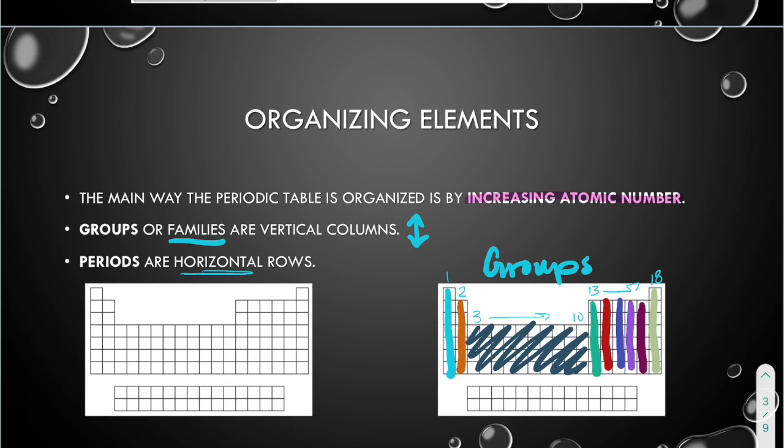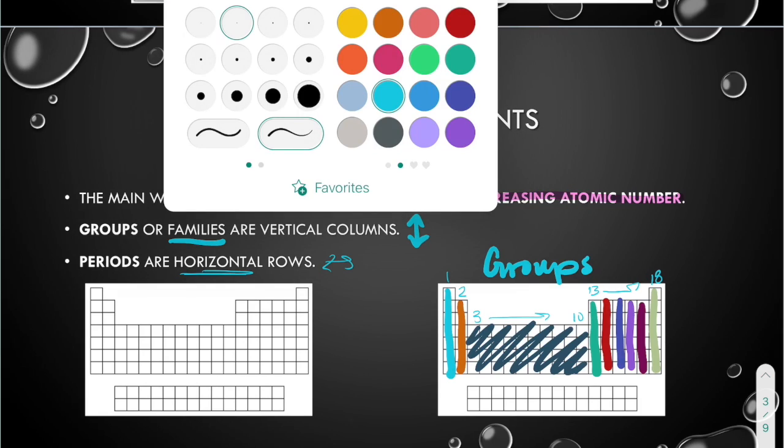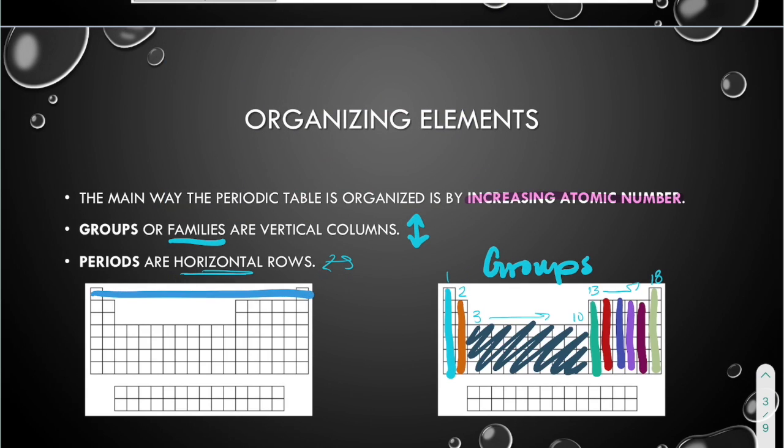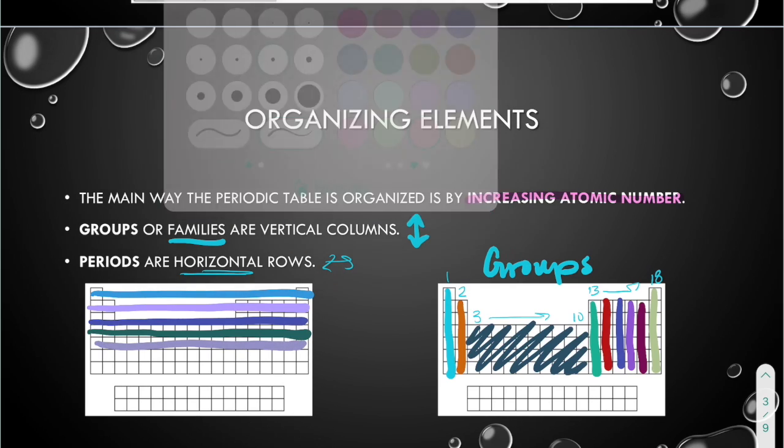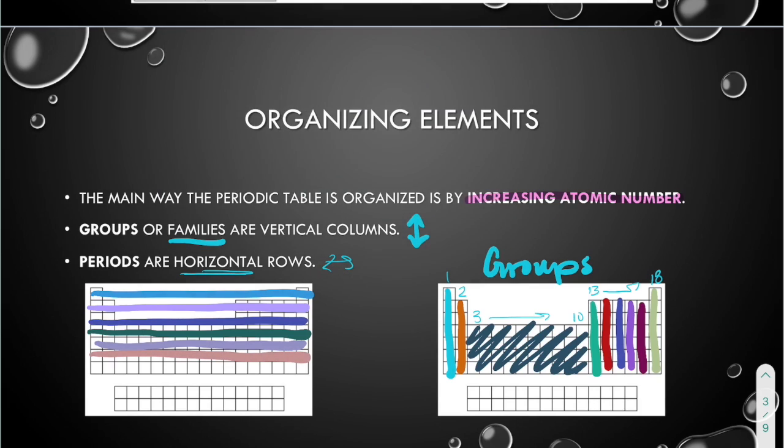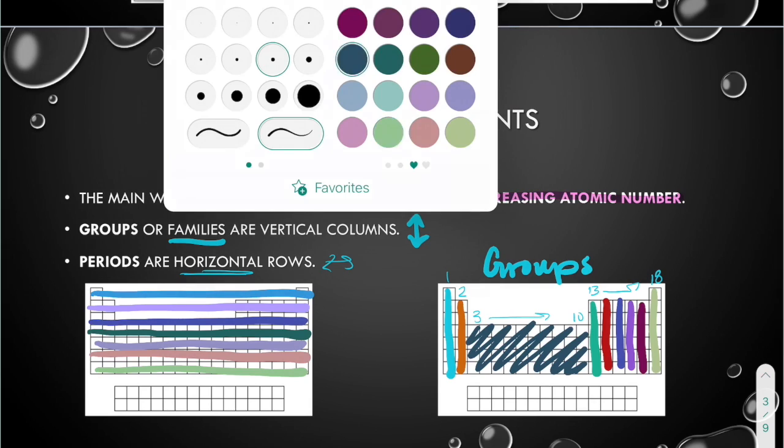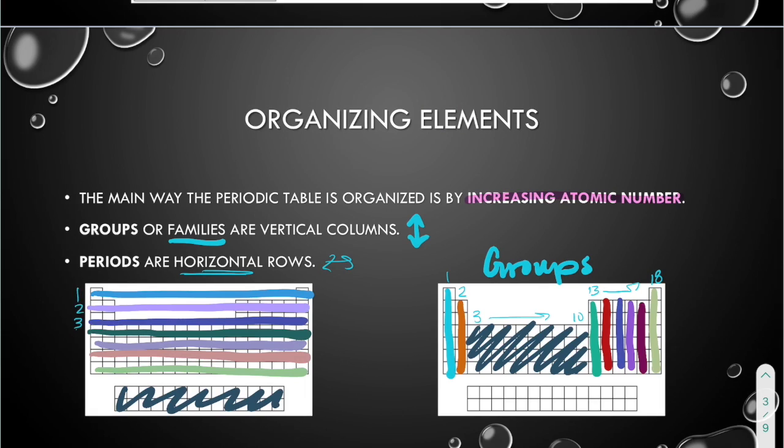Periods are horizontal, which means they go side to side. So your periods go side to side. And because they go side to side, they get numbered along the left-hand side. We kind of ignore the bottom two. But they get numbered along the side: two, three, four, five, six, seven. There are seven periods.